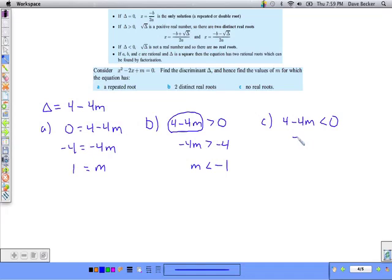We can quickly do this and divide by negative 4, which switches the inequality. So m must be greater than 1, oopsie, m must be greater than 1.